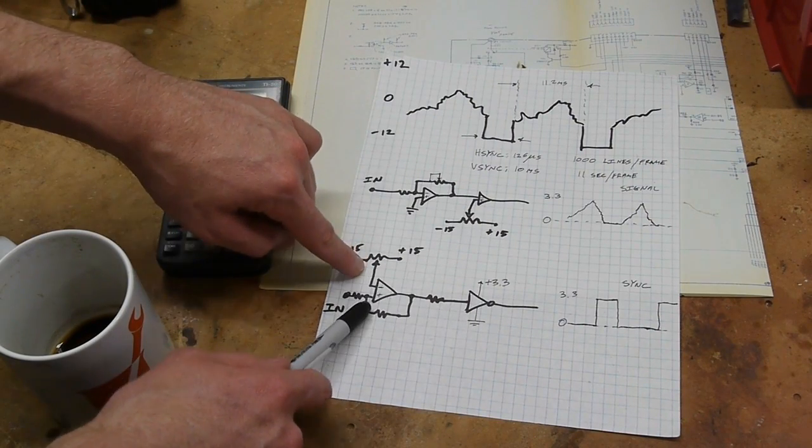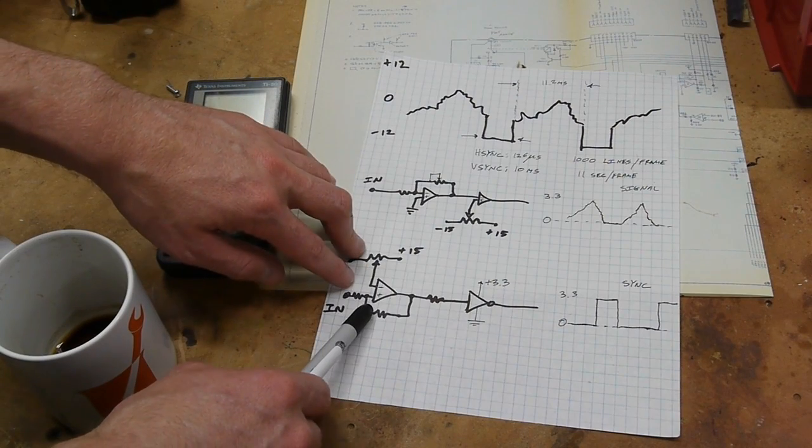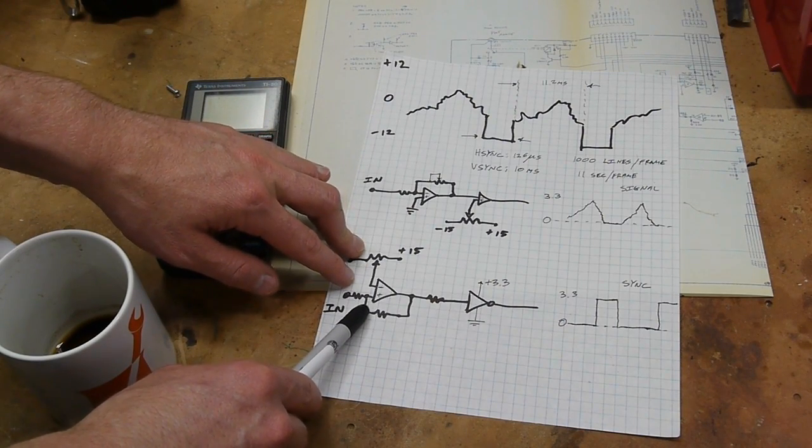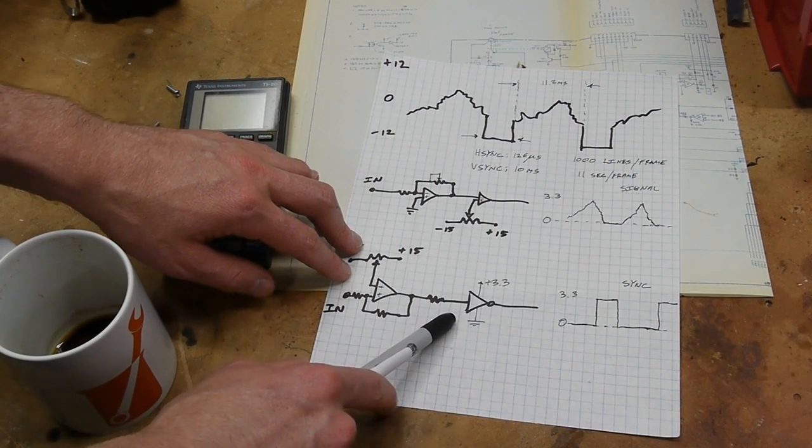Now remember that this comparator is still using plus and minus 15 volt rails, but we want the signal to be 0 to 3.3.